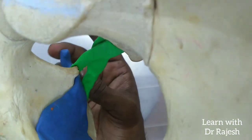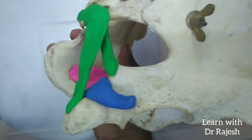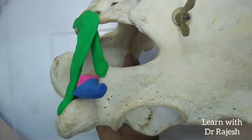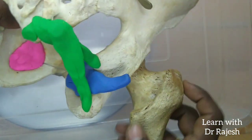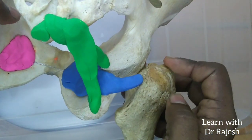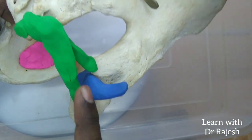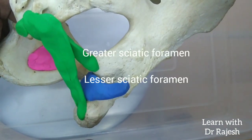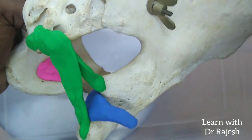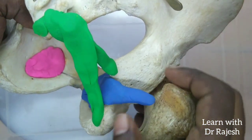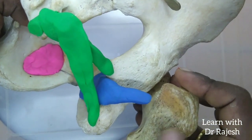The tendon of the obturator internus muscle emerges out of the pelvis through the lesser sciatic notch and gets attached onto the greater trochanter of the femur — that is its insertion. So the obturator internus is inserted into the greater trochanter of the femur by emerging out through the lesser sciatic foramen. This is a point to note that was not mentioned in our previous video on the sciatic foramina.